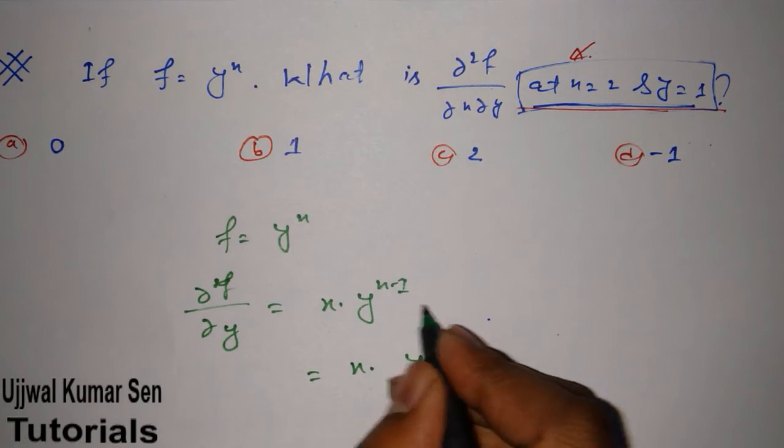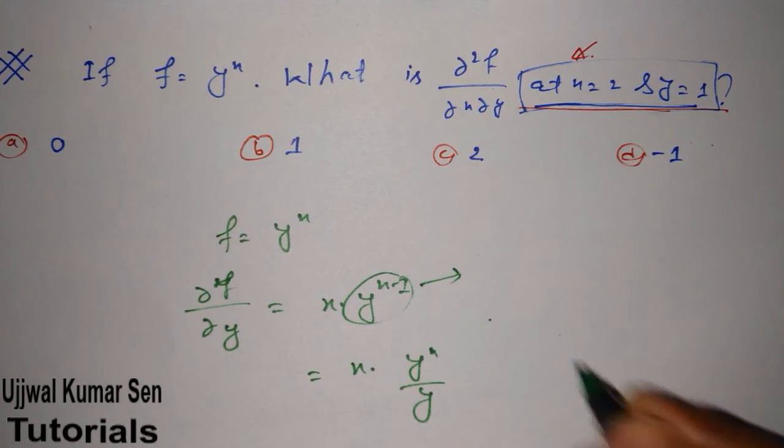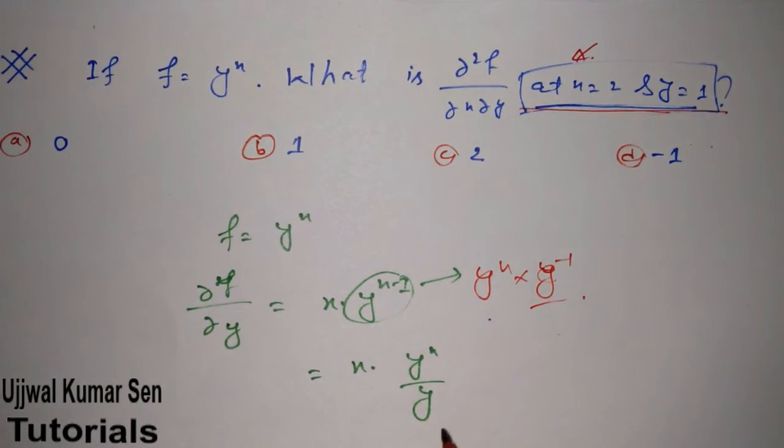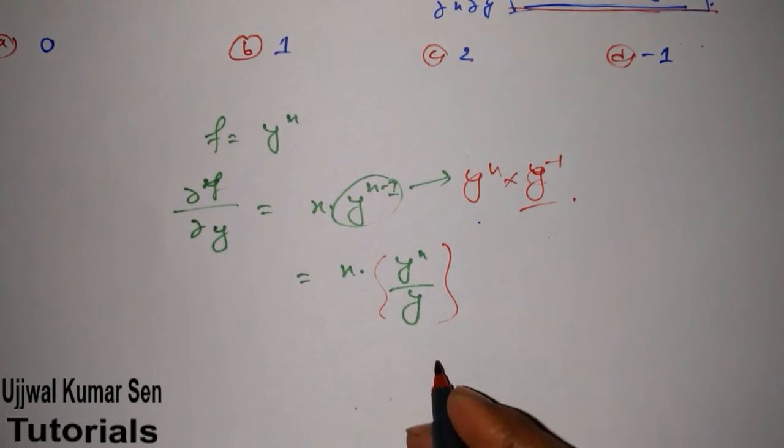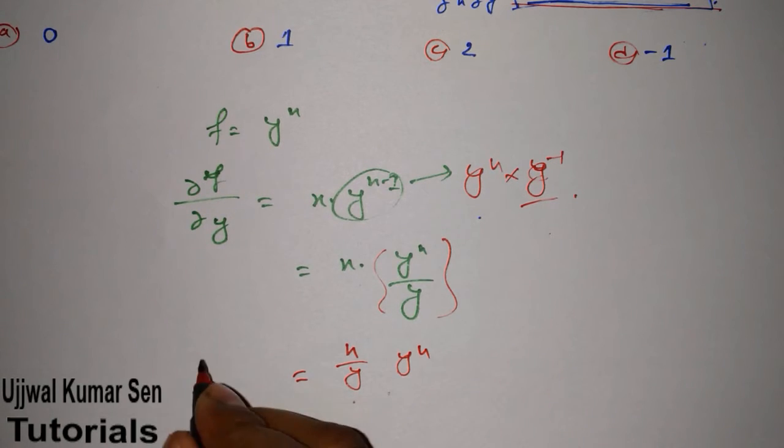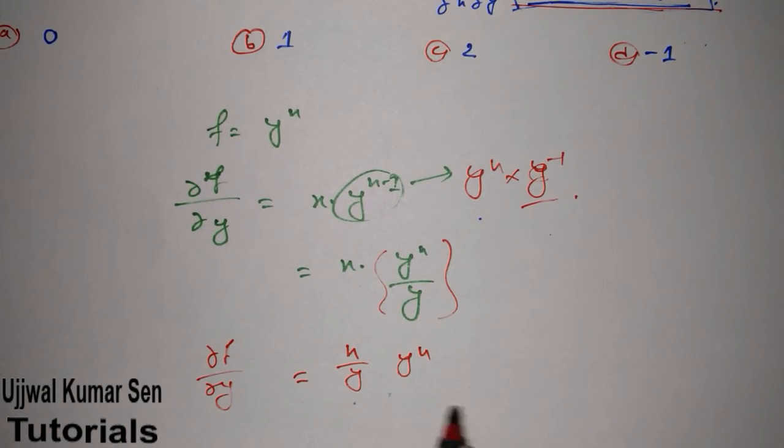We can write this as y^x times y^(-1), so we can write it as x/y times y^x. So ∂f/∂y equals x/y times y^x.